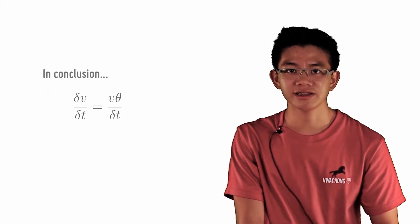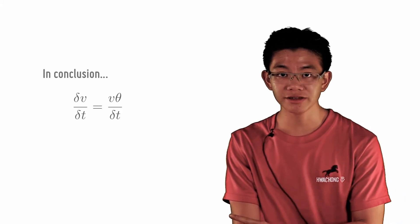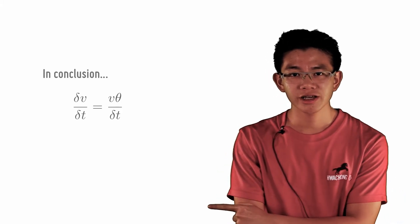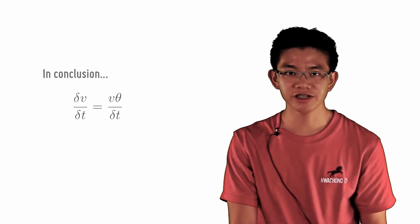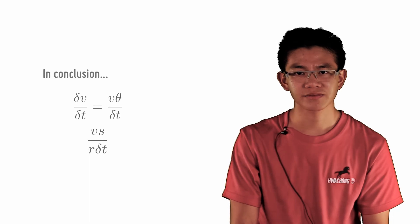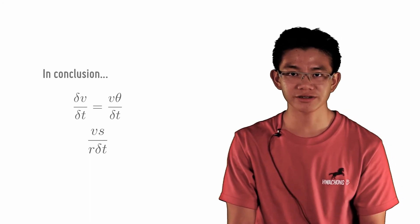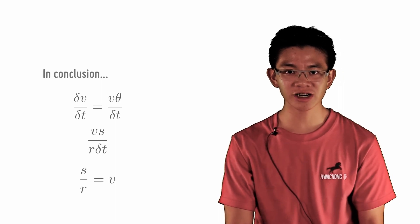Expressing theta as the length of arc divided by the radius, which if you recall is another special property of the radian, and when we plug it back into the equation, we have v s over r delta t. And since s over delta t is the velocity, we get the centripetal acceleration to be v squared over r.